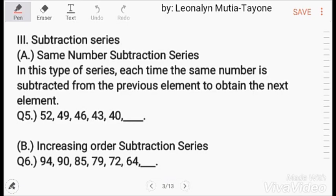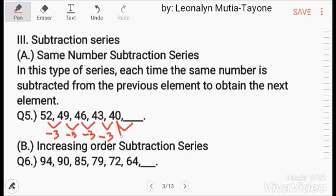Next, subtraction series. Same number subtraction series: each time the same number is subtracted from the previous element to obtain the next element. In this example, the pattern is minus 3 each time. So 40 minus 3 equals 37 — 37 is the answer.